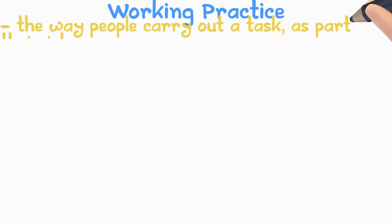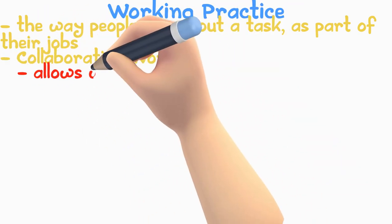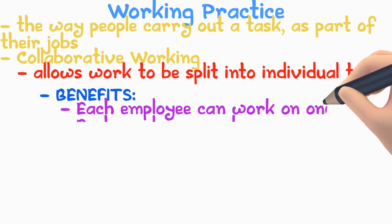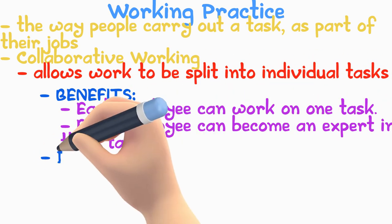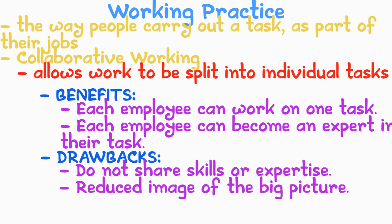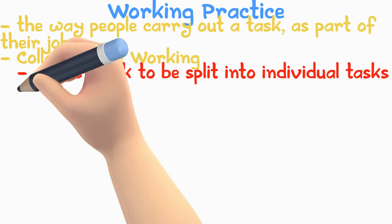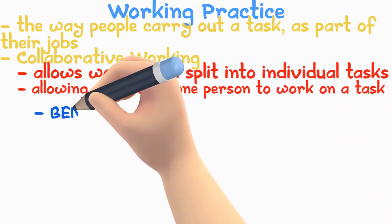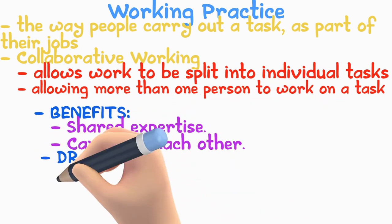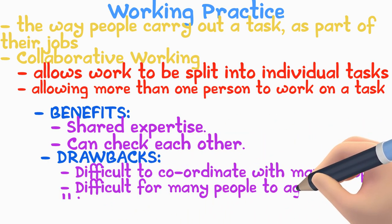Working practices is the way that people carry out a certain task as part of their job. The internet's impact on working practices has had two main changes. Collaborative working allows work to be split into individual tasks — benefits include each employee working on one task and becoming an expert in it, but drawbacks include not sharing skills and a reduced view of the big picture. Collaborative working can also allow more than one person on one task — benefits include shared expertise and checking each other's work, but drawbacks include difficulty coordinating with many people and difficulty agreeing on one thing.